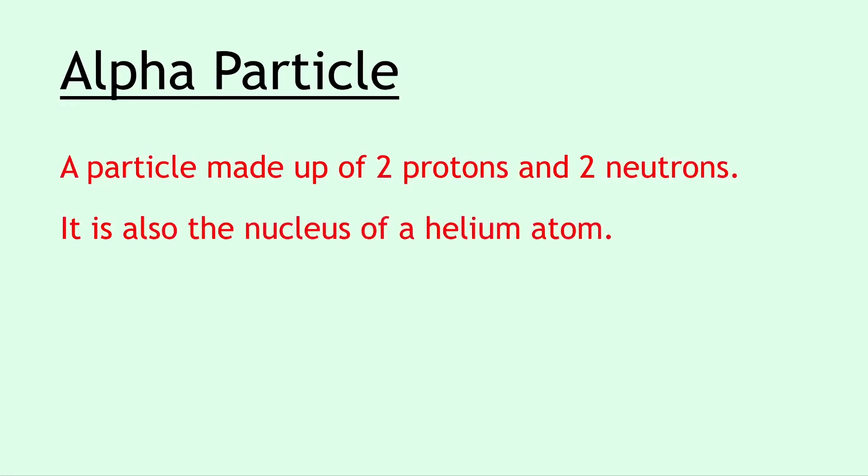For the radiation topic we kick off with the alpha particle. An alpha particle is a particle made up of two protons and two neutrons. It is also the nucleus of a helium atom, so if you're asked to state what is meant by an alpha particle you could write either of these to get the mark.